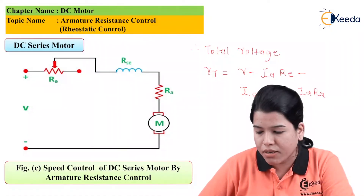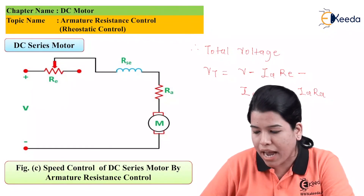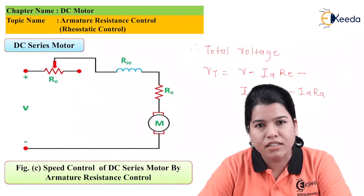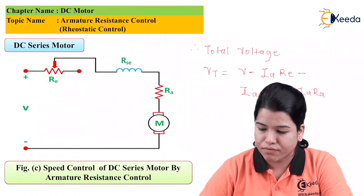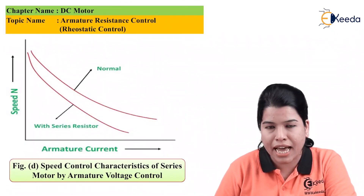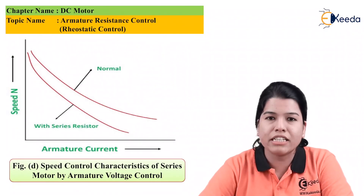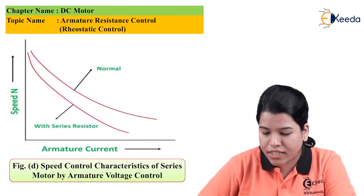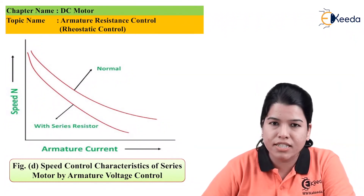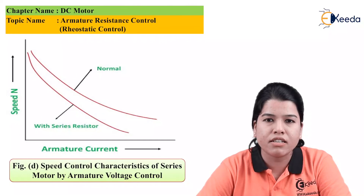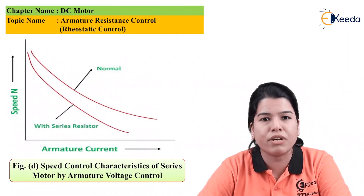The total voltage is given by Vt = V − Ia·Re − Ia·RSE − Ia·Ra. Due to the presence of Re, the voltage drop increases and the effective voltage decreases. Hence, as the voltage decreases, the speed also decreases. The figure shows the speed versus armature current characteristic for the DC series motor. With normal operation — that is, with no external resistance in series — the speed decreases with increasing armature current. With the external series resistance, the characteristic falls below the normal working characteristic. Hence, with the use of external series resistance, the speed can be controlled below the rated speed. In this way, speed can be controlled for both the DC series motor and the DC shunt motor.